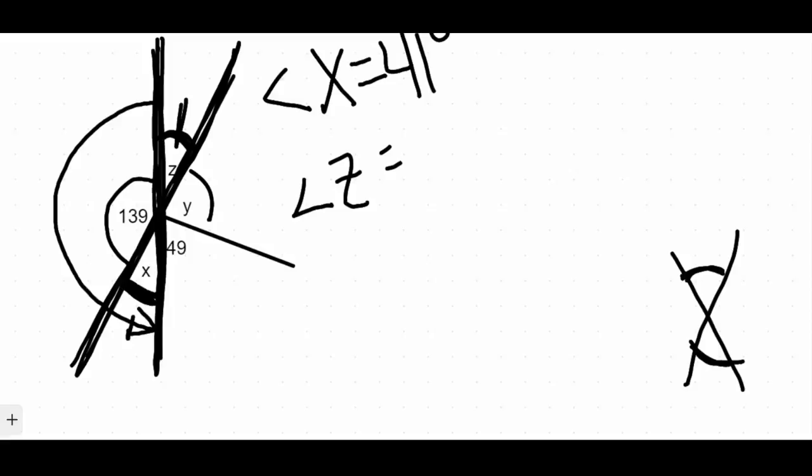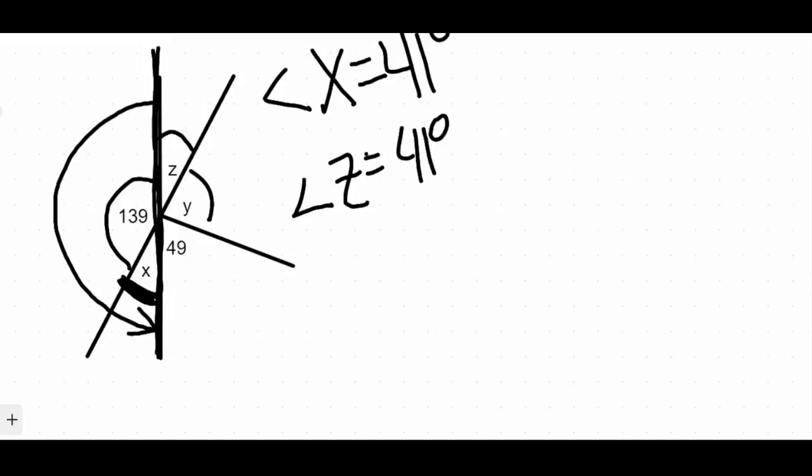And what I know about vertical angles is that vertical angles are congruent. They are exactly the same thing. So if angle X is 41 degrees, that tells me that angle Z is 41 degrees by using the definition of vertical angles.